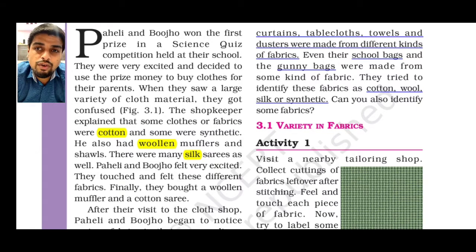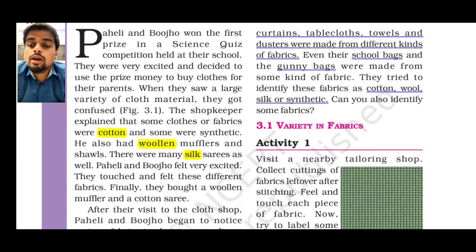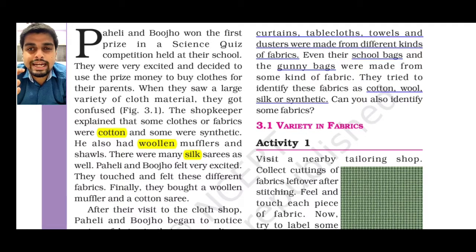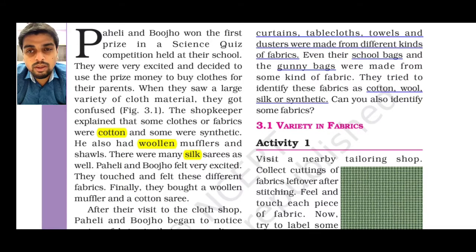Bozo and Paheli noticed bed sheets, blankets, curtains, tablecloths, towels, and dusters were made up of different kinds of fabric. Even their school bags and gunny bags were made from different kinds of fabric. They tried to identify these as cotton, wool, silk, or synthetic fiber. We will also do this activity in coming videos, classifying materials like curtains and bed sheets into fabric types.